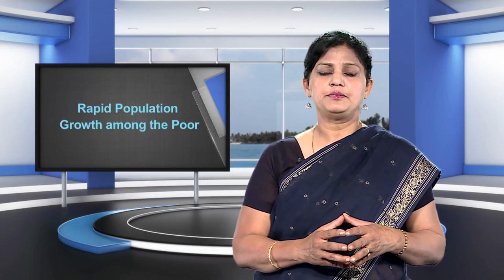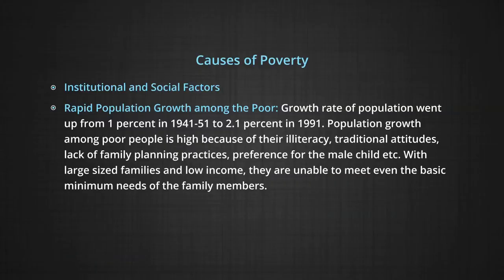The second point is rapid population growth among the poor. The growth rate of population went up from 1 percent in the 1941-51 period to 2.2 percent in 1991, which is phenomenal. The population growth among poor people is high because of illiteracy, traditional attitudes, lack of family planning practices, and preference for the male child. With large-sized families and low income, they are unable to meet even the basic minimum requirements of family members.